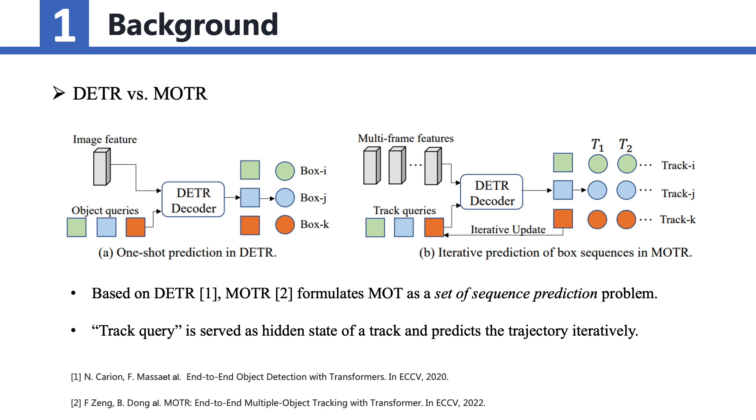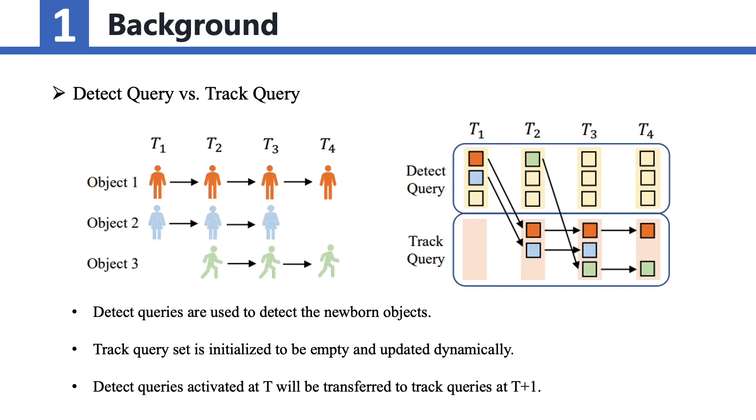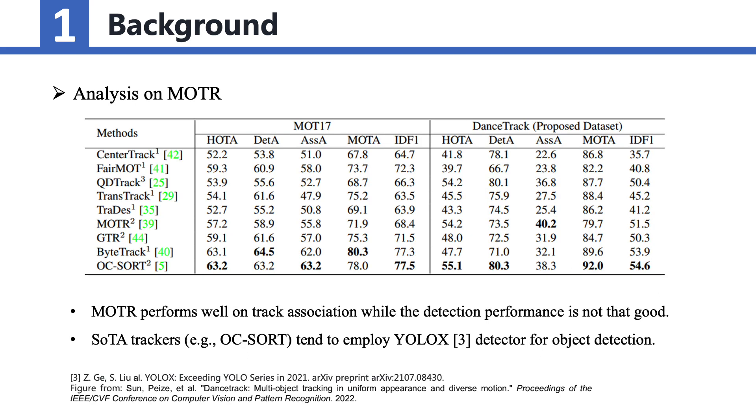It extends the idea of DETR by introducing the notion of track queries. These track queries serve as hidden states of tracks and predict the trajectory of objects iteratively. In MOTR, there are two types of queries: DETECT queries and TRACK queries. DETECT queries are responsible for detecting newly appearing objects in each frame. On the other hand, the TRACK query set is initially empty and dynamically updated over time. While MOTR has shown promising results in track association, its detection performance often lags behind state-of-the-art trackers.